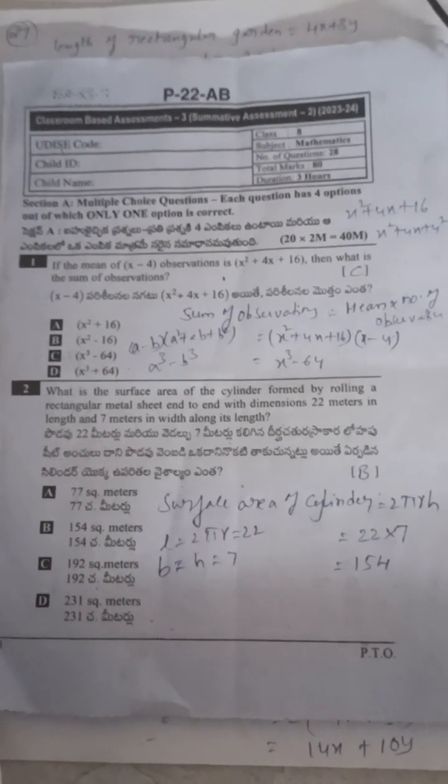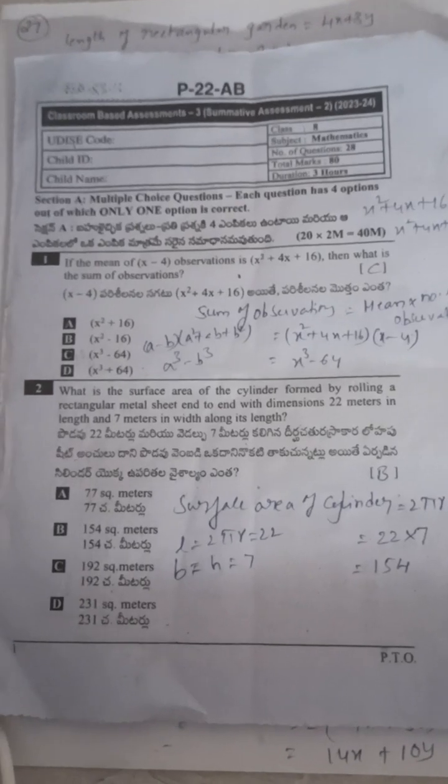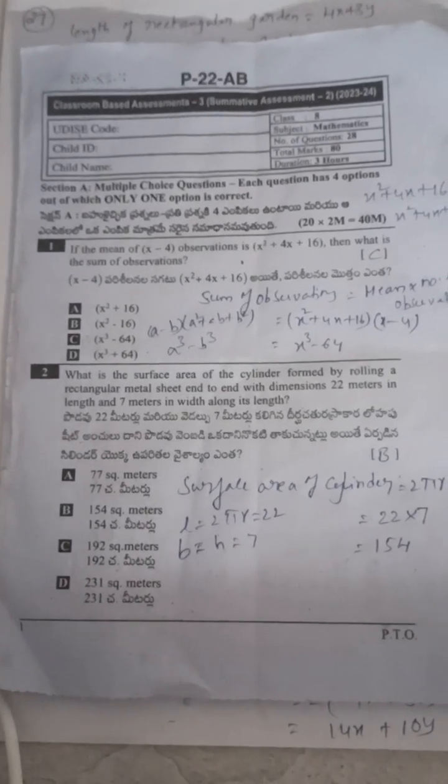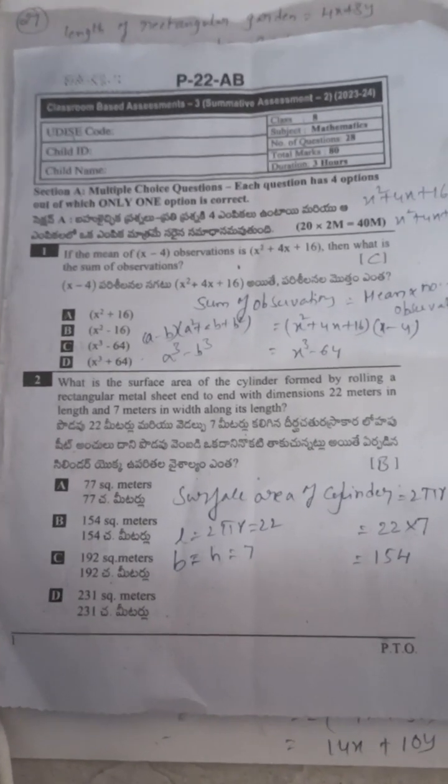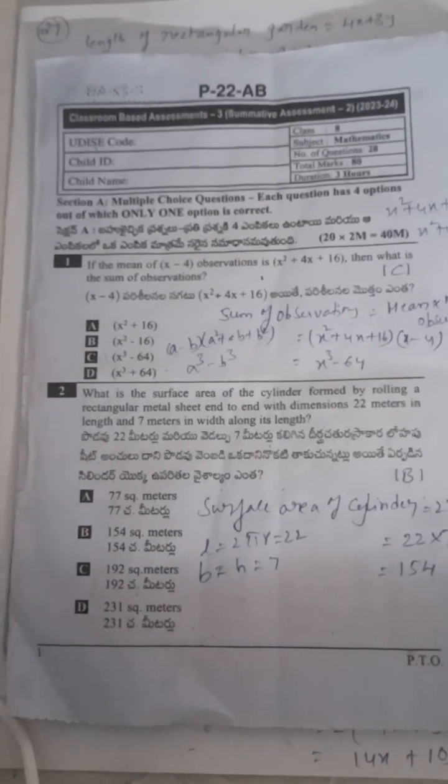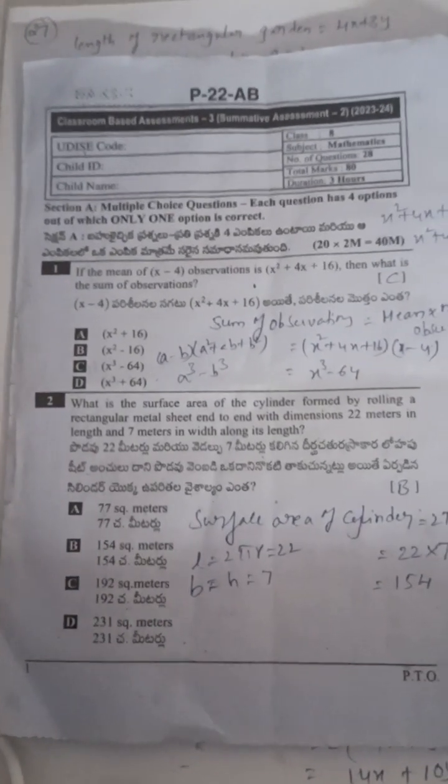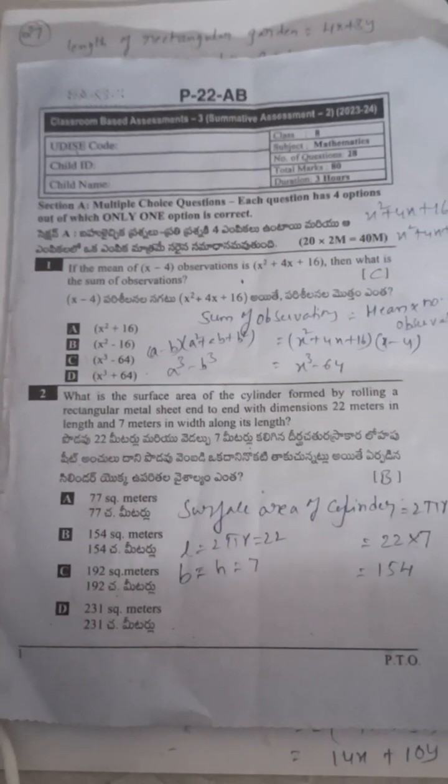Therefore the sum of observations equals x cube minus 4 cube, which is x cube minus 64. Next, second question: what is the surface area of a cylinder formed by rolling a rectangular metal sheet end to end with dimensions 22 meters length and 7 meters width along its length?